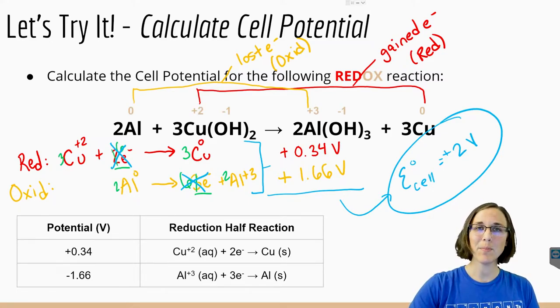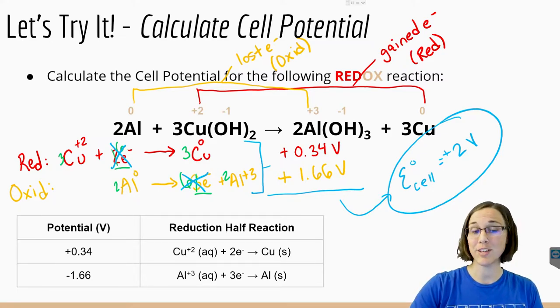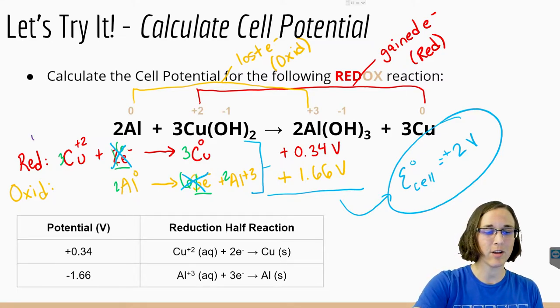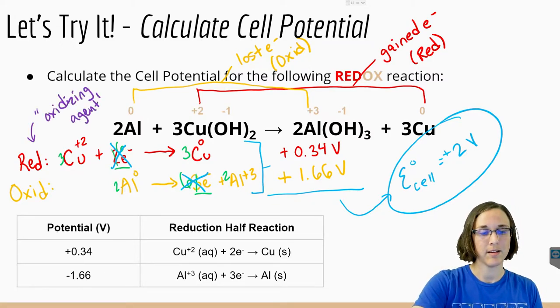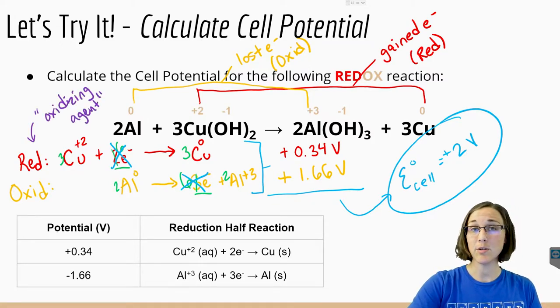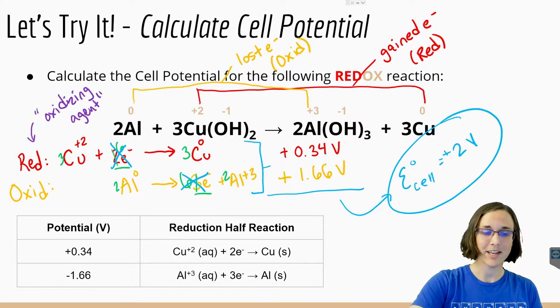Since the copper is the one that's the reduction half, it's also referred to as the oxidizing agent. And since the aluminum is the oxidation half, it's referred to as the reducing agent.